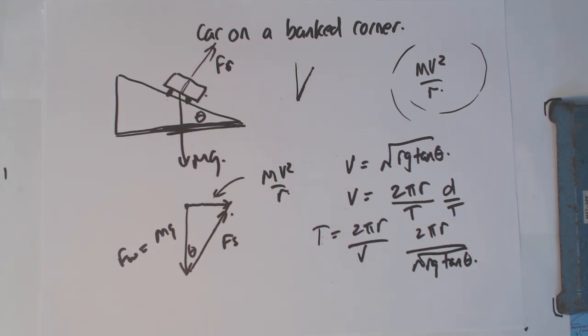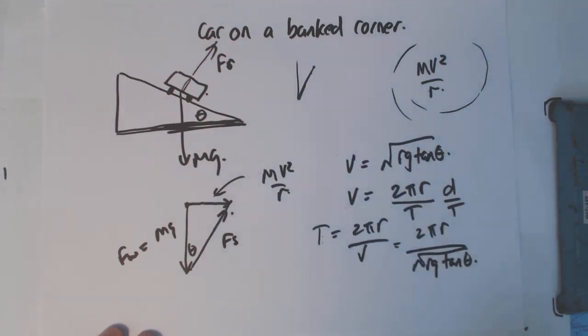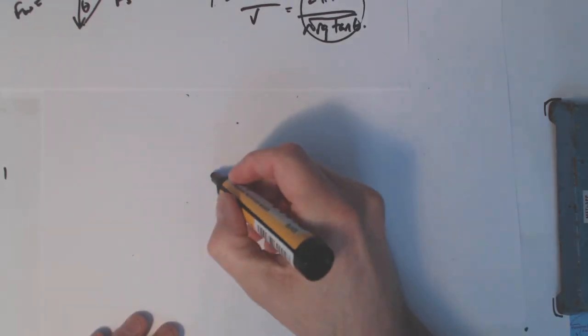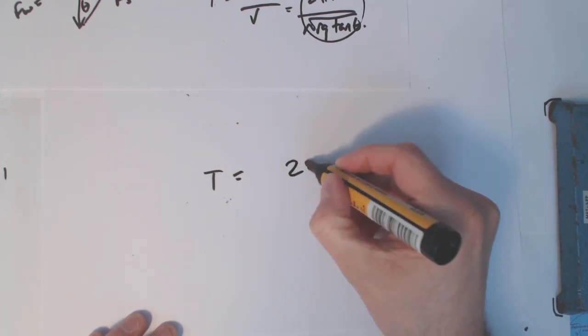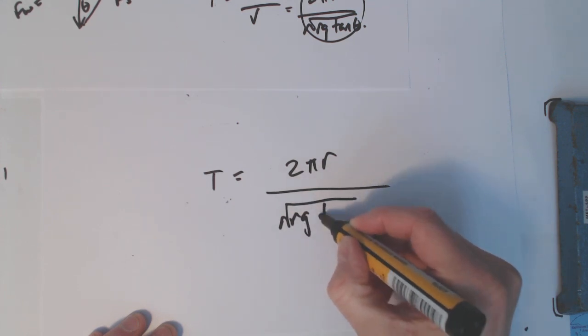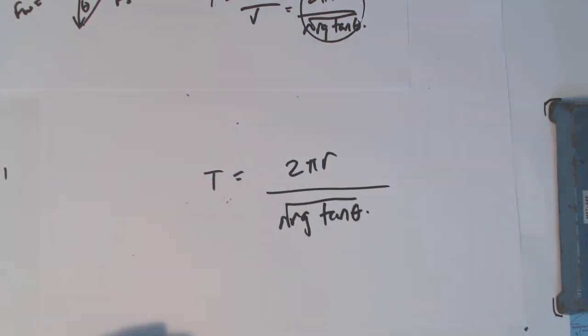And that becomes the time it takes to go around the circle once. Now, if I ask you to do the little maths here and make that formula a little bit nicer, can you do it? What we're saying is we've got a formula like this: T = 2πr / √(rg tan θ). Now, what have I got a problem with here? What I've got a problem with is the fact that